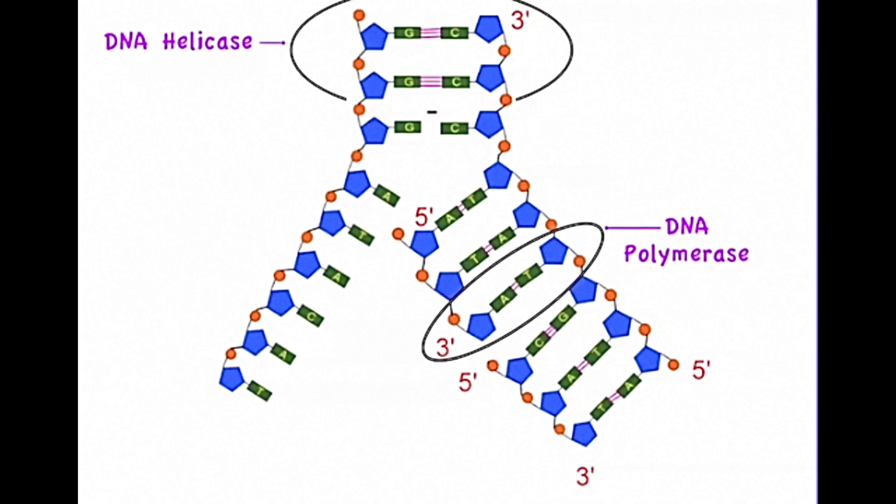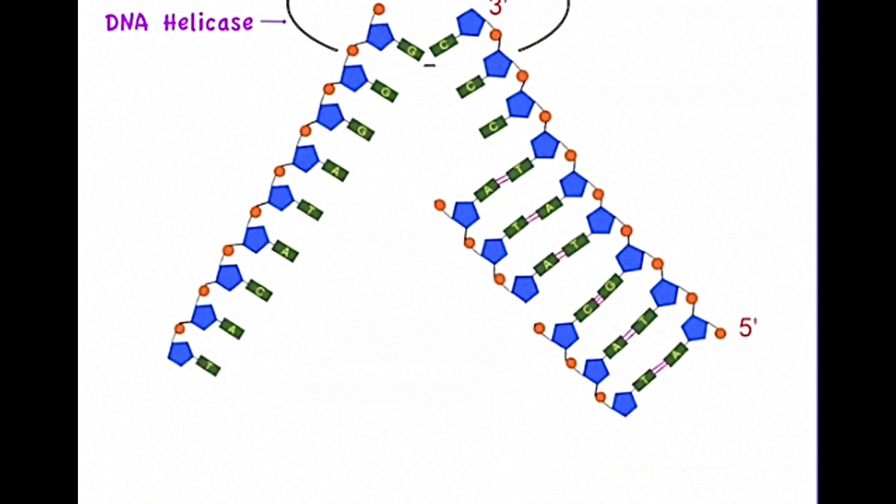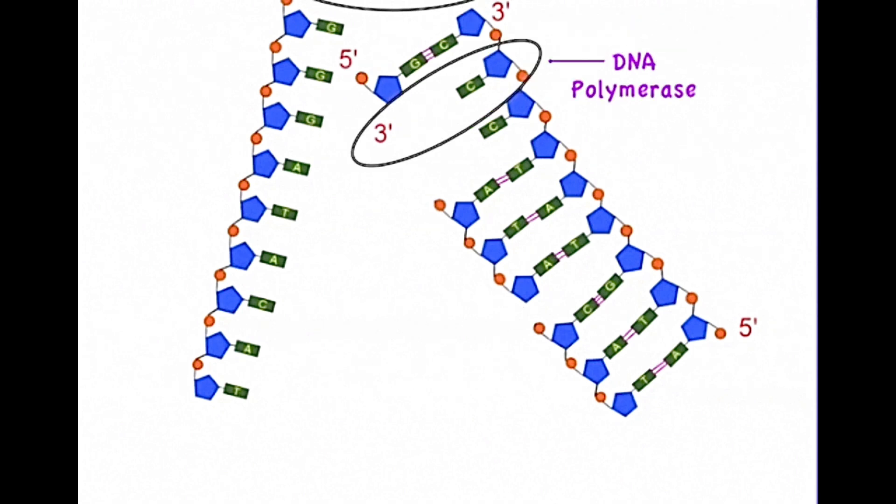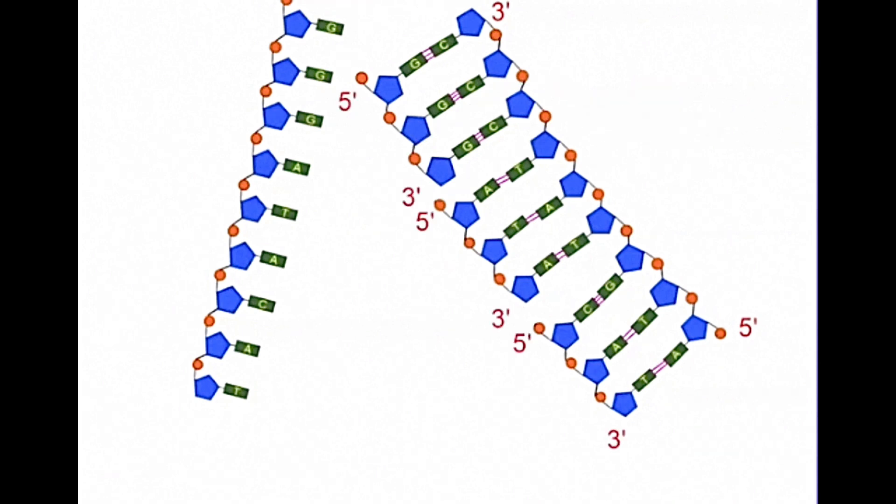So what's different here with the lagging strand is that each time the DNA helicase moves up, the DNA polymerase is operating in the opposite direction. This results in the completion of the lagging strand in shorter fragments. The lagging strand is therefore being completed discontinuously as compared to the leading strand that was completed continuously.